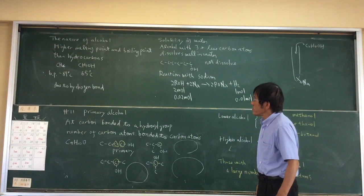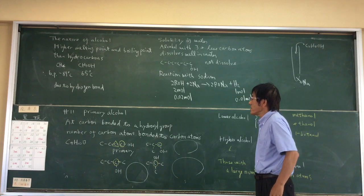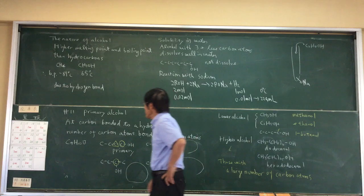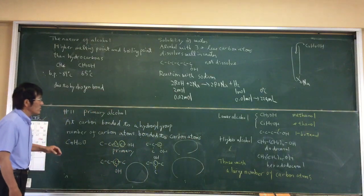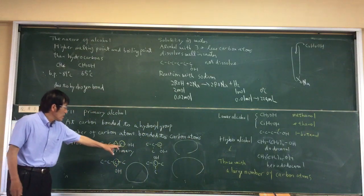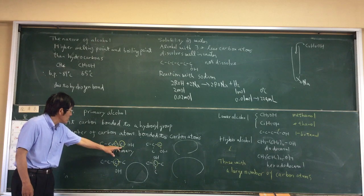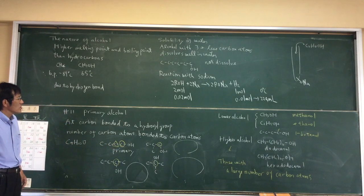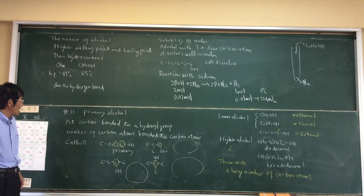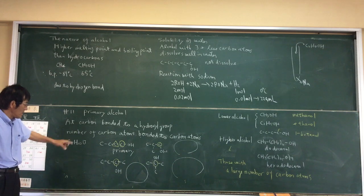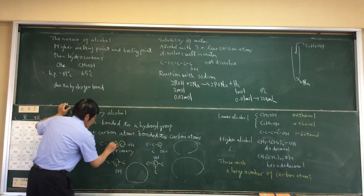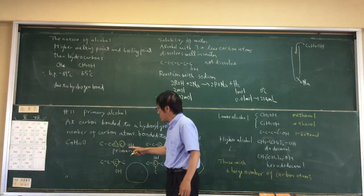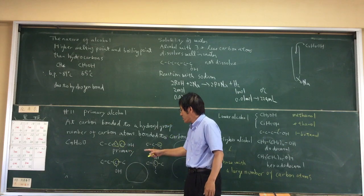Today's talk is primary alcohol, secondary alcohol, and tertiary alcohol. The classification is based on the number of carbon atoms bonded to the carbon atom with the hydroxy group. If the number is one, this alcohol is primary alcohol.